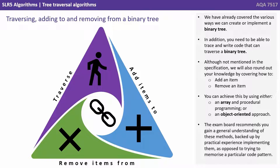We've already covered the various ways we can implement or create a binary tree. In addition, you need to be able to trace and write code that can traverse a binary tree. Although not mentioned in the specification, we'll also round out your knowledge by covering how to add an item and remove an item. You can achieve this using either an array and procedural programming or an object-oriented approach. The exam board recommends you gain a general understanding of these methods backed up by practical experience implementing them, as opposed to trying to memorise any particular code pattern.